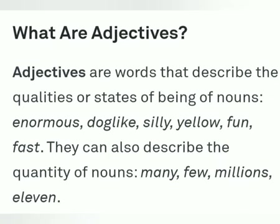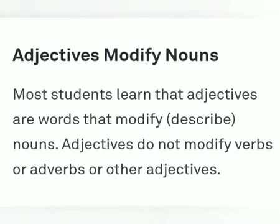Adjectives are words that describe the qualities or states of being of nouns — enormous, dog-like, silly, yellow, fun, fast. They can also describe the quantity of nouns, like many, few, millions. Adjectives modify nouns. Most students learn that adjectives are words that modify and describe nouns. Adjectives do not modify verbs, adverbs, or other adjectives.